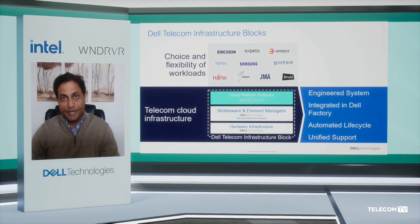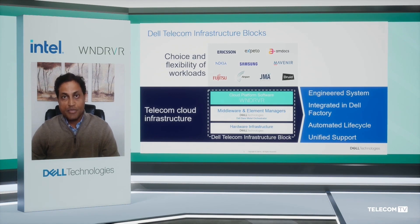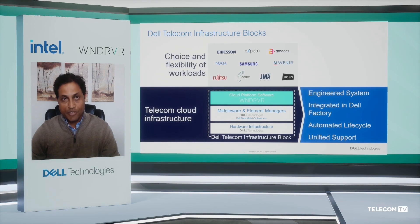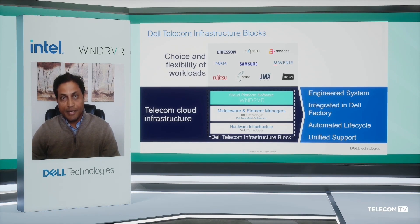The second challenge that open RAN brings is that you have tens of thousands of edge nodes where the DUs need to be deployed across geographies in a distributed fashion. This cannot be managed without a very strong automated zero-touch provisioning. To address these challenges, we work with our partners Wind River and Intel together and built a solution called Dell Telecom Infrastructure Blocks for Wind River, optimized for virtual RAN and open RAN deployment.